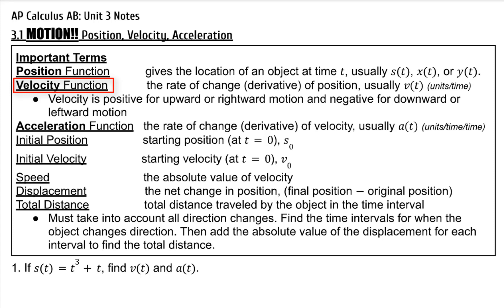Velocity is positive for upward or rightward motion and negative for downward or leftward motion. Acceleration is the rate of change or derivative of velocity, usually a of t, and the units for this are units per time per time, or units per time squared.